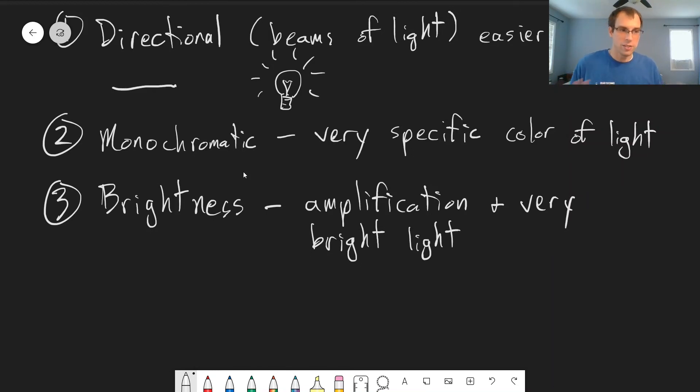So amplification and very bright light. Essentially the light can be several times brighter than the sun in a very specific directed beam at a specific color. And that can be incredibly useful, right? For laser eye surgery or something like that, you have very bright light that you can control. Makes it really useful.